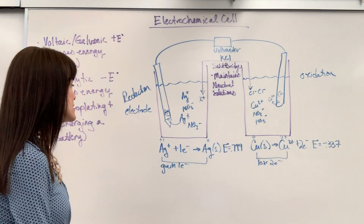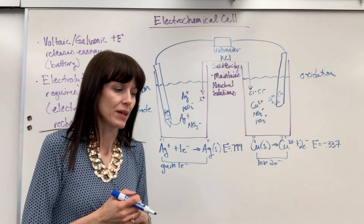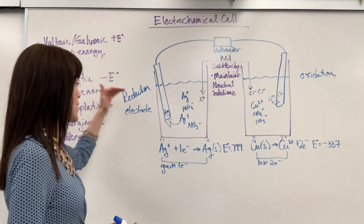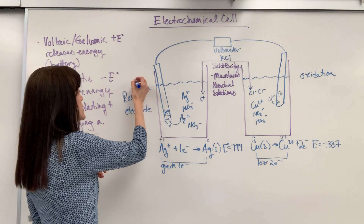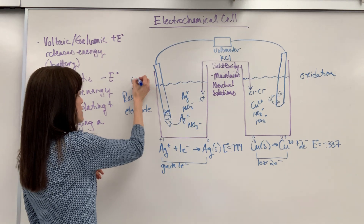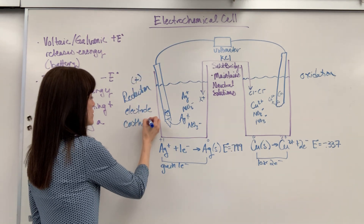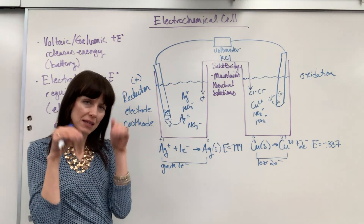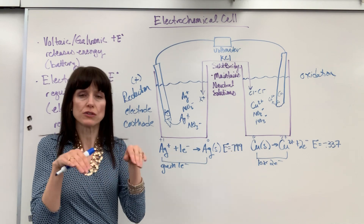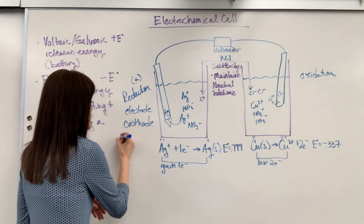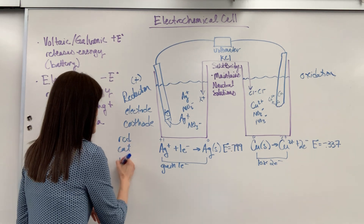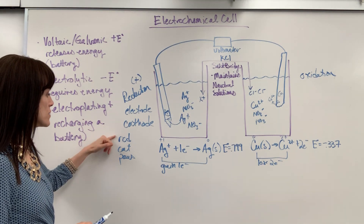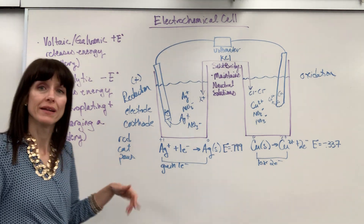Now some labeling — I'll teach you a couple of silly sayings to help you remember this. Reduction: the site that's reduced is considered positive, and we also call it the cathode. To help you remember: think of a little kitty cat with red paws — red cat paws — and there is your reduction, cathode, positive. Whichever side is reduced is automatically called the cathode and gets the positive sign.